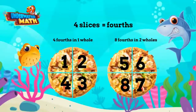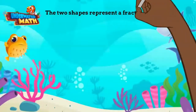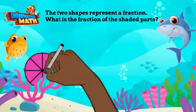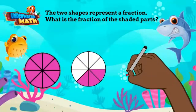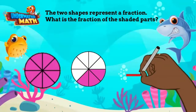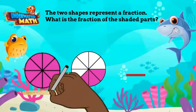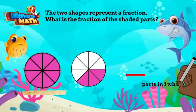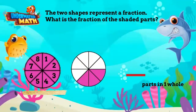Let's do another one. Let's look at this problem — the two shapes represent a fraction. What is the fraction of the shaded parts? We first need to name the fraction beyond or more than one whole, so we look at one figure and count the total number of parts it was partitioned into — we are also determining the denominator of the fraction. One, two, three, four, five, six, seven, eight. Since there are eight parts, the denominator is eight.